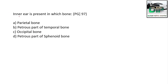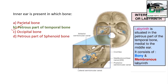The inner ear is present in which bone? Option A: Parietal bone. Option B: Petrous part of temporal bone. Option C: Occipital bone. Option D: Petrous part of sphenoid bone. The correct answer is petrous part of temporal bone. The inner ear, or labyrinth, is situated in the petrous part of the temporal bone, which is medial to the middle ear. This inner ear structure consists of the bony labyrinth and the membranous labyrinth.